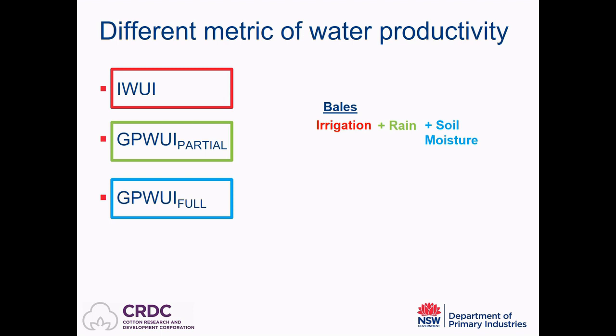A slightly different question we might be interested in is: how much irrigation water does a crop use, and how has that changed over time? When we think about the water being accessed from rivers and bores and how much of that is being used for cotton production, we look at just the irrigation water — and we call that the irrigation water use index. We're going to look at the long-term trends of these three indices.